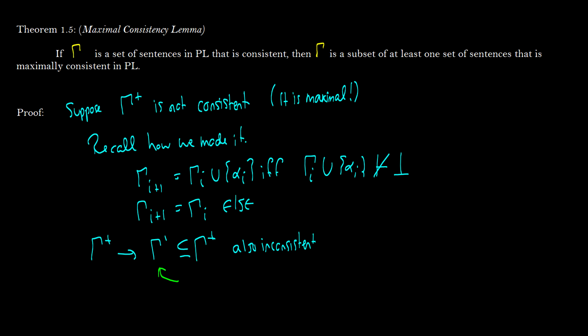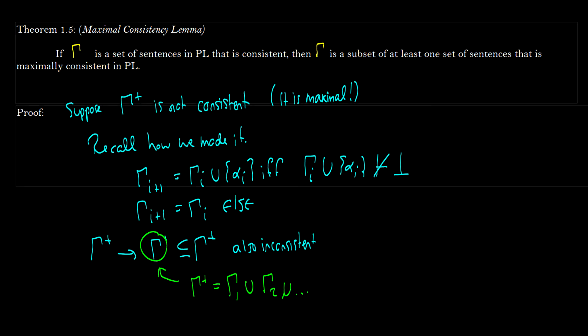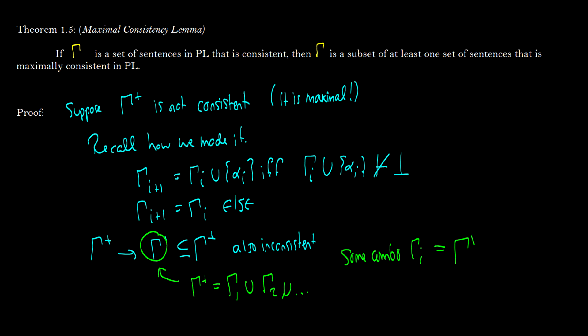Now we have a smaller subset that's inconsistent, and this is a problem. Gamma-plus is made of gamma 1, gamma 2, and so on, all the way up. We know that some combination of these gammas is the same as gamma prime. Therefore we should not have a contradiction, because we built all these different gammas to be consistent. If we take the union of all these consistent sets and somehow get an inconsistency, that doesn't make sense — because if there was an inconsistency, it wouldn't have been put into the set. So we've proven a contradiction.